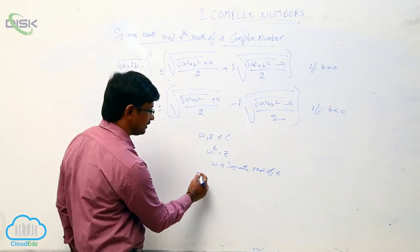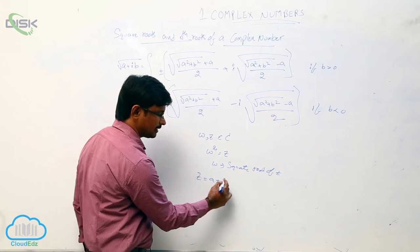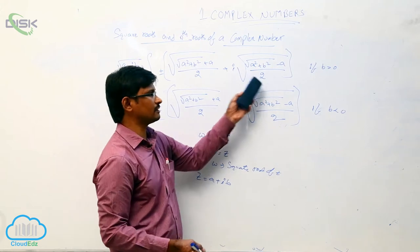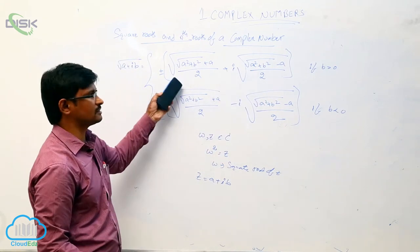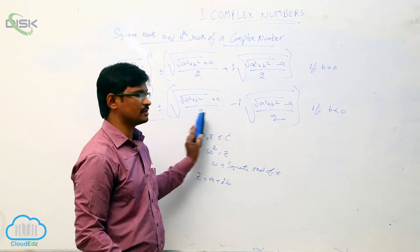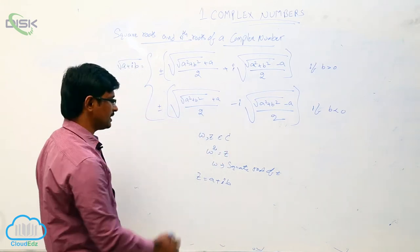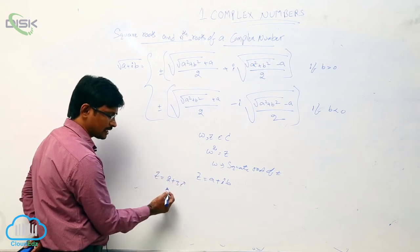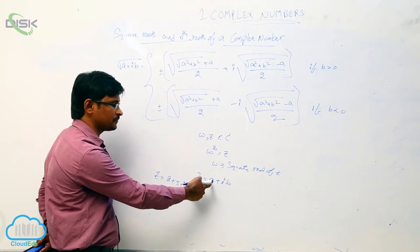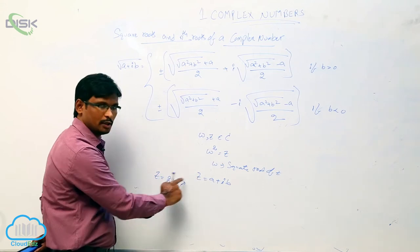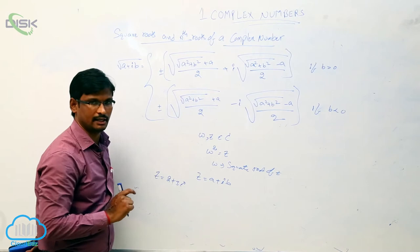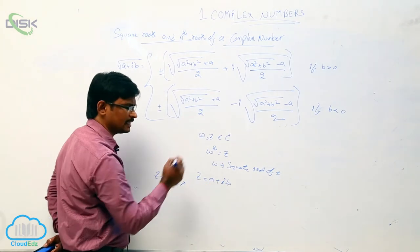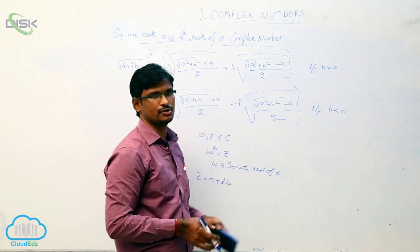If Z equals A plus iB is a complex number, where B is greater than 0, the square root of the complex number is given by this formula. If B is less than 0, a different form applies. For example, to find the square root of Z equals 2 plus 3i, compare with Z equals A plus iB, so A equals 2 and B equals 3. Substitute into the formula — depending on whether B is greater than or less than 0, use the appropriate form.